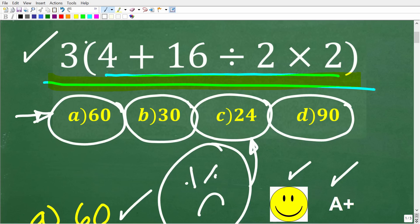All right, so once again, we have 3 times parenthesis 4 plus 16 divided by 2 times 2. How do you do this problem? Well, let's go ahead and get into it right now.